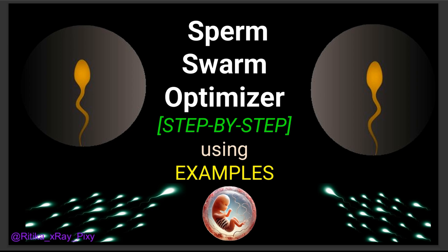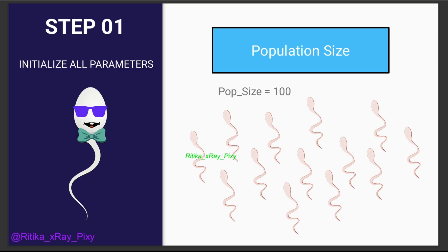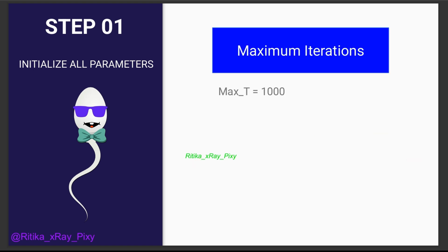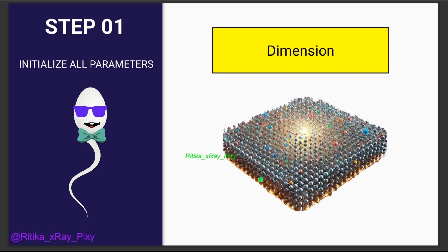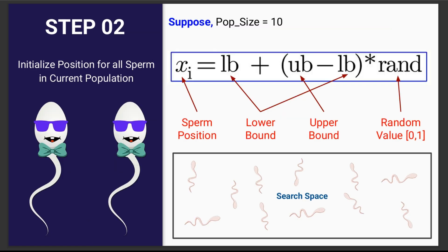Now step by step we will understand the optimizer's working. The first step is to initialize all important parameters: population size (total number of sperms), maximum number of iterations (how many times the loop repeats before displaying the best solution), the objective function, dimension, mutation rate, and others.